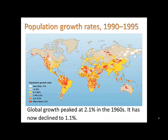Where is this growth happening the fastest? Where we see red are areas of greatest growth — countries or regions within countries. White is actually declining fast, and grey is declining also. Zero indicates mild growth.